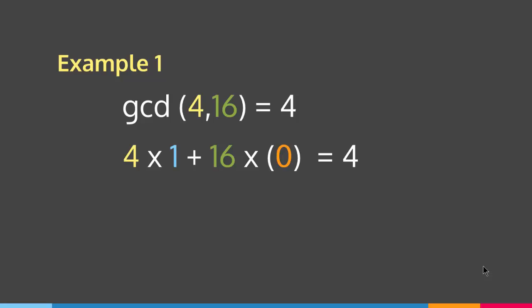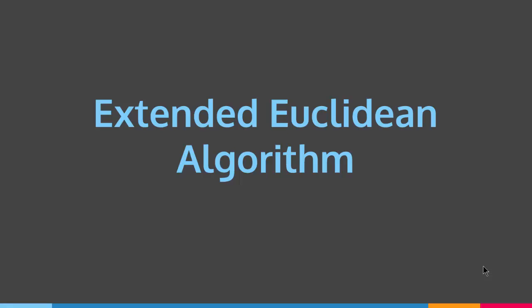Now we know what Bézout's identity is — how can we find it? We can find it through a method called the extended Euclidean algorithm. We know what the Euclidean algorithm is for finding the gcd of two numbers. This is an extended version of it that lets us find Bézout's coefficients for a and b.